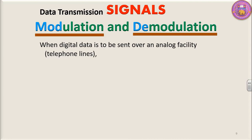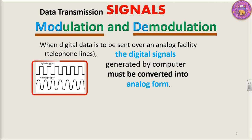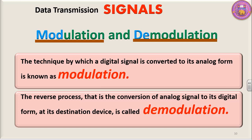When digital data is to be sent over an analog facility, i.e. telephone lines, the digital signal generated by the computer must be converted into analog form. The computer generates digital signals and they need to be translated to analog form to be transmitted over the telephone lines. The technique by which a digital signal is converted to its analog form is known as modulation. The reverse process — the conversion of analog signal to its digital form at the destination device — is called demodulation.